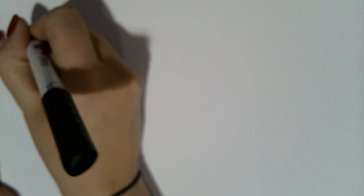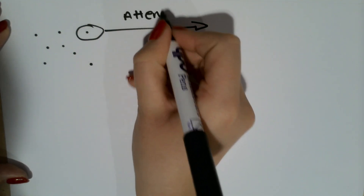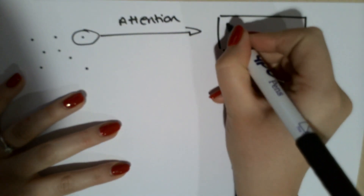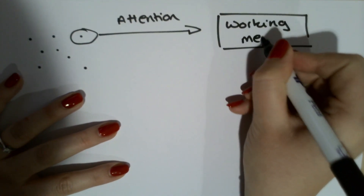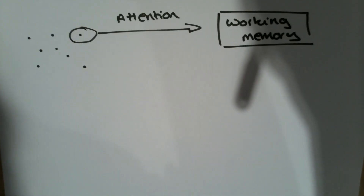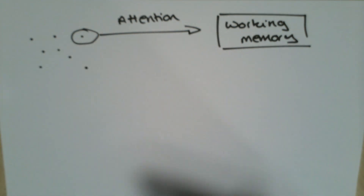The first part of Willingham's model is about the environment. In the environment there are lots of things that pupils can pay attention to, and only the ones that pupils attend to tend to enter into their working memory. The working memory is finite, which means only a small amount of information can be used at any one time. This is where we talk about the idea of cognitive overload — if we are trying to hold too much information in our head we won't be able to fit that in our working memory.